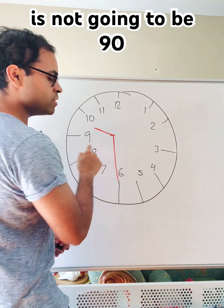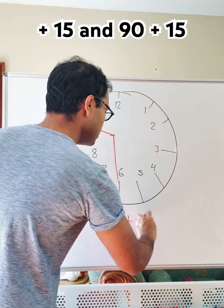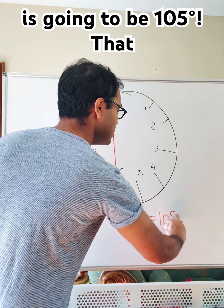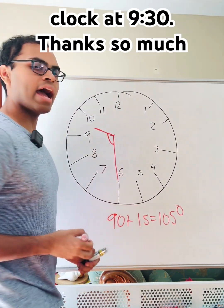And so the actual angle is not going to be 90, but it's going to be 90 plus 15. And 90 plus 15 is going to be 105 degrees. That is the angle between the hour hand and minute hand of a clock at 9:30.